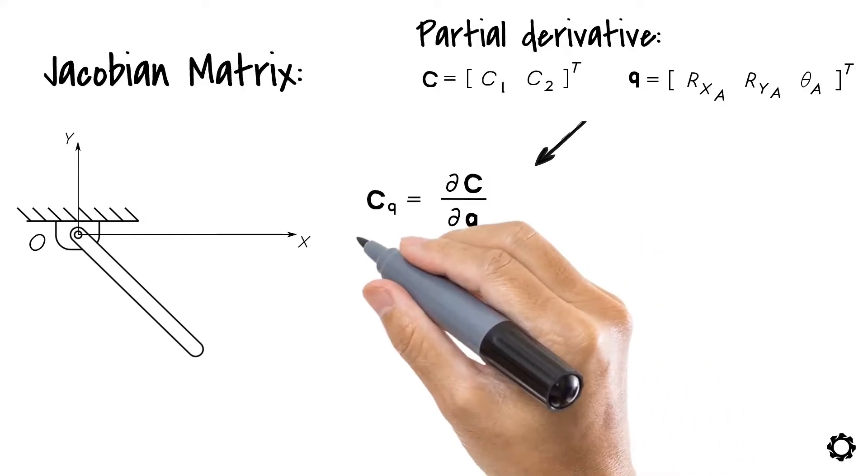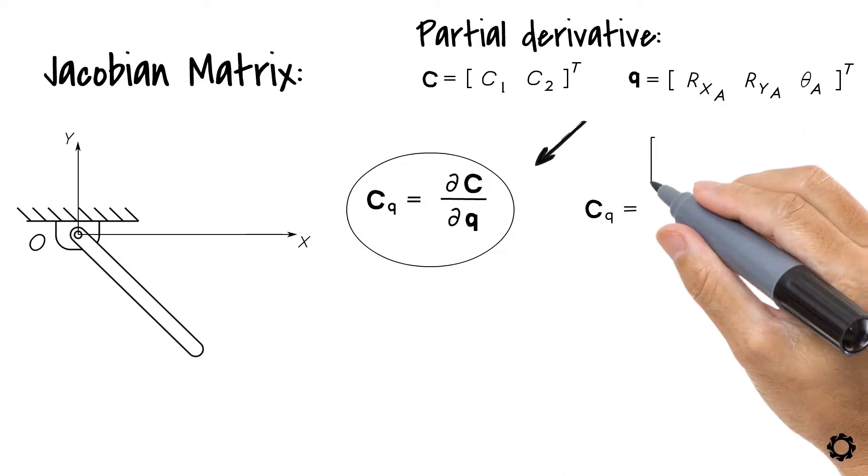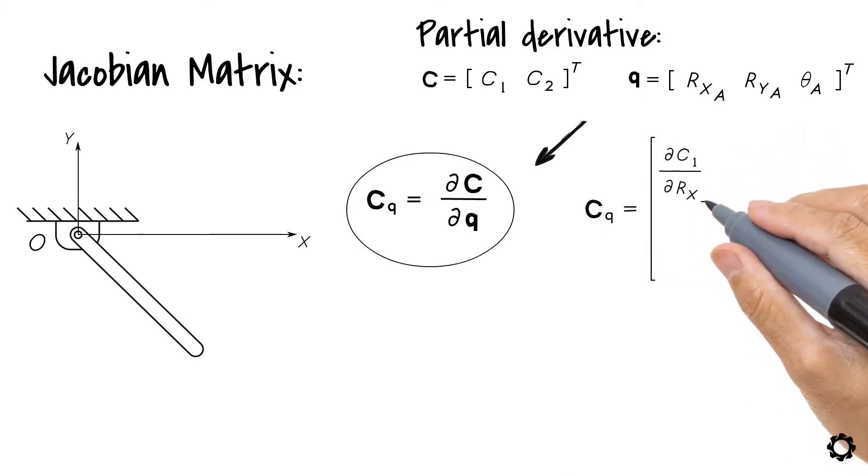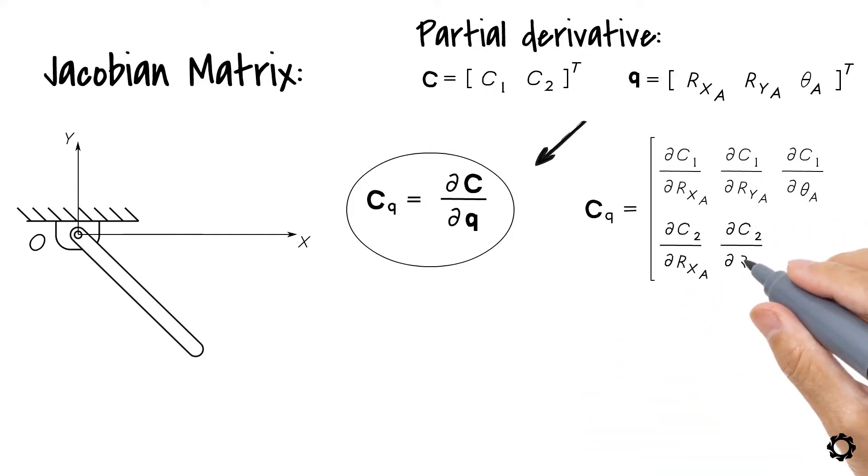If we do this partial derivative, this results in CQ equals delta C1 delta Rxa, delta C1 delta Rya, delta C1 delta Theta A, delta C2 delta Rxa, delta C2 delta Rya, delta C2 delta Theta A.